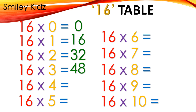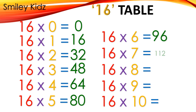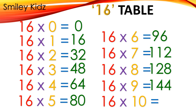Table 16: 16×0=0, 16×1=16, 16×2=32, 16×3=48, 16×4=64, 16×5=80, 16×6=96, 16×7=112, 16×8=128, 16×9=144, 16×10=160.